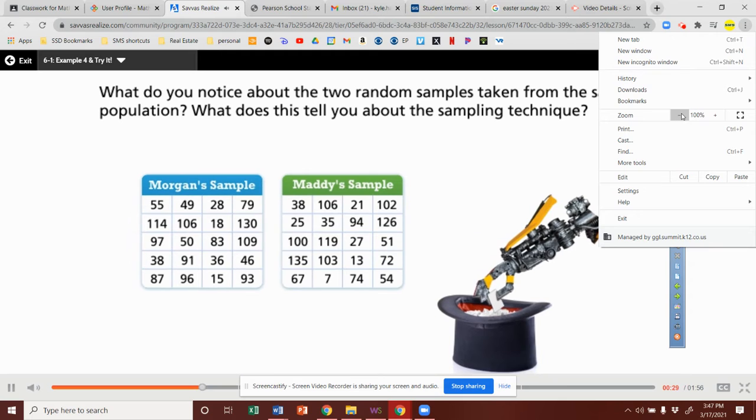What do you notice about the two random samples taken from the same population? What does this tell you about the sampling technique?